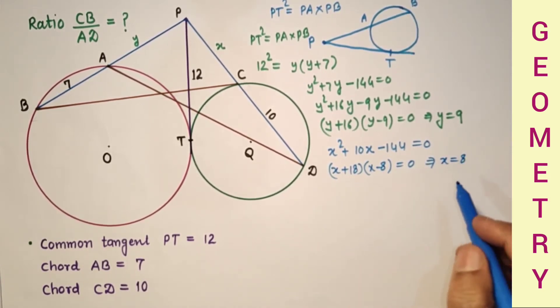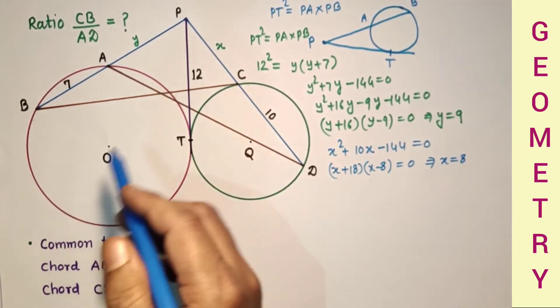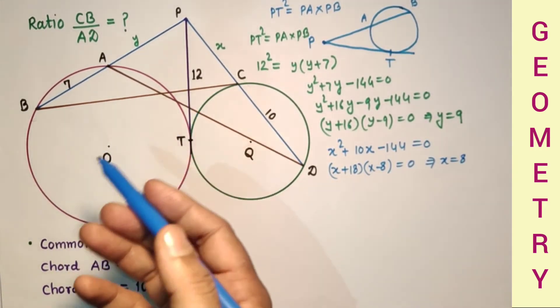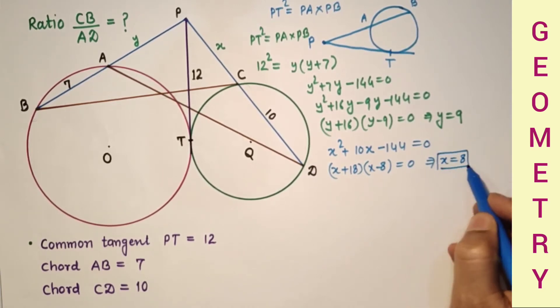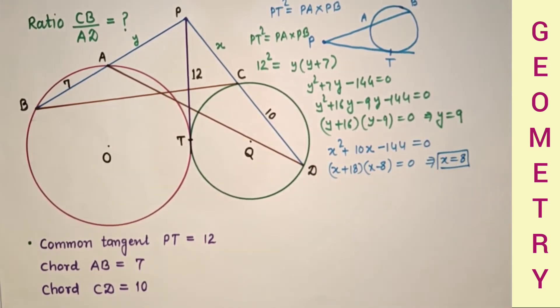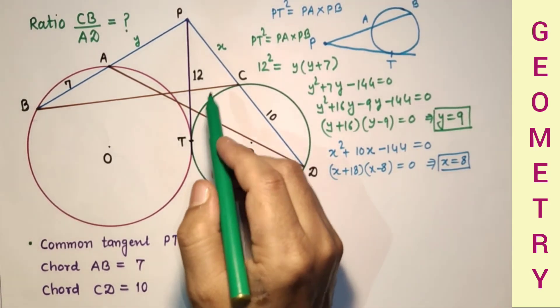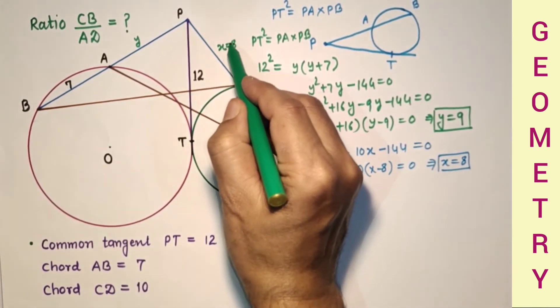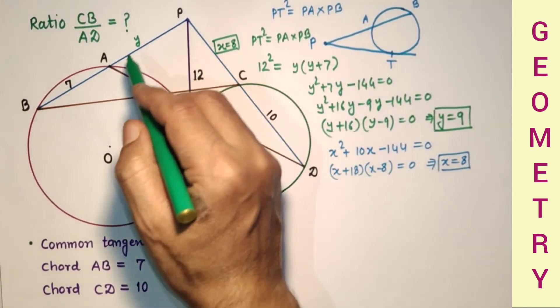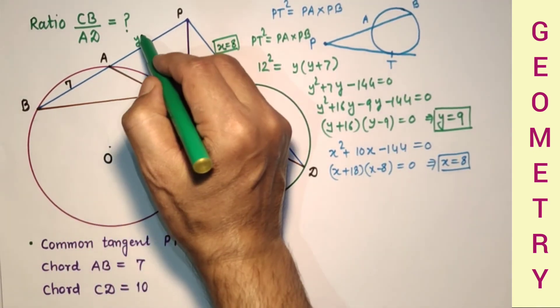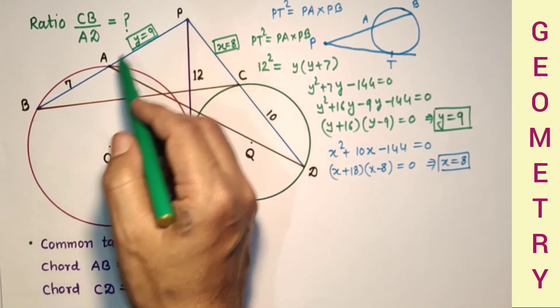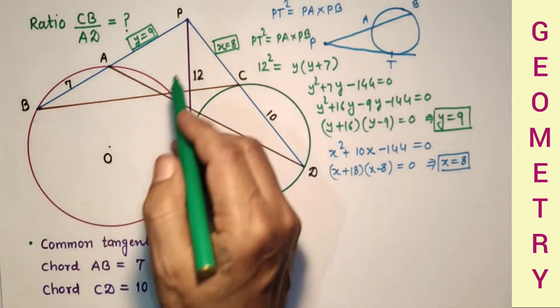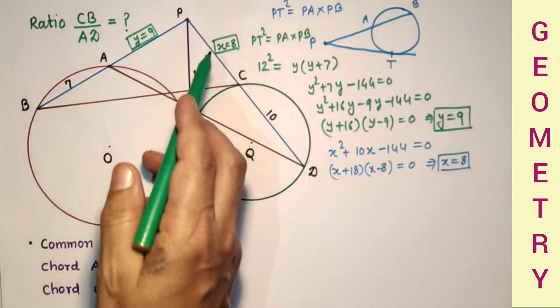So minus value will not be accepted here as the distance, length, or distance of the side or chord will never be negative. So X is equal to 8 we found and Y is equal to 9 we found. So this PB is 9 plus 7, which is 16, and this PD is 8 plus 10, which is 18.